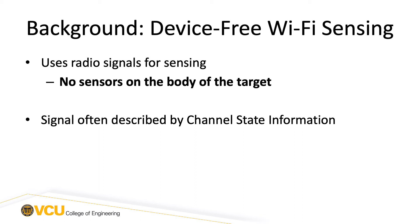First we'll look at the background. What is device-free Wi-Fi sensing? Device-free sensing will typically use radio signals as an indicator of some properties within the environment. Given a transmitter radio and a receiver radio, the signal received is affected directly by attributes of the environment such as multipath, as well as any movement in the environment.